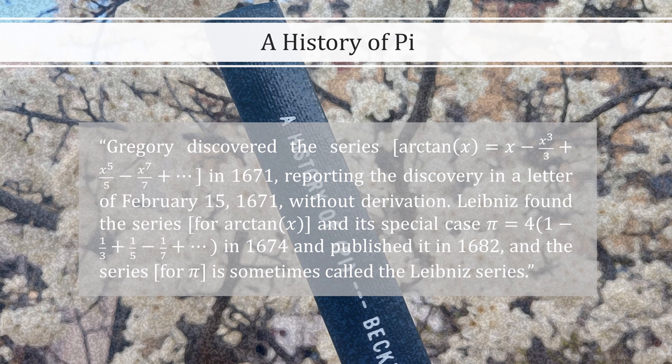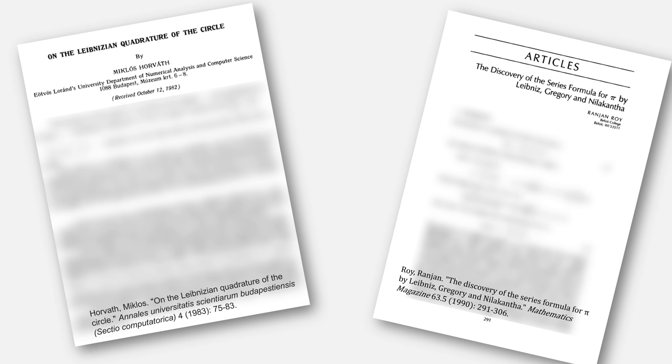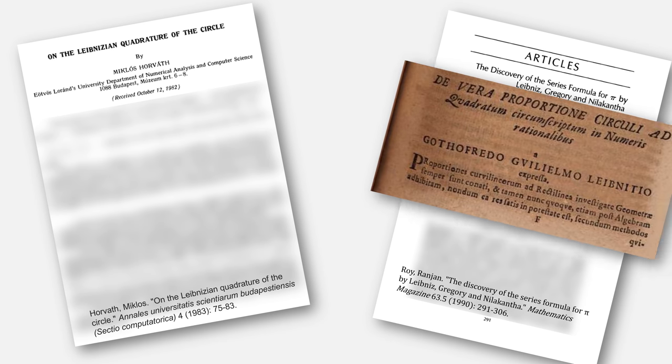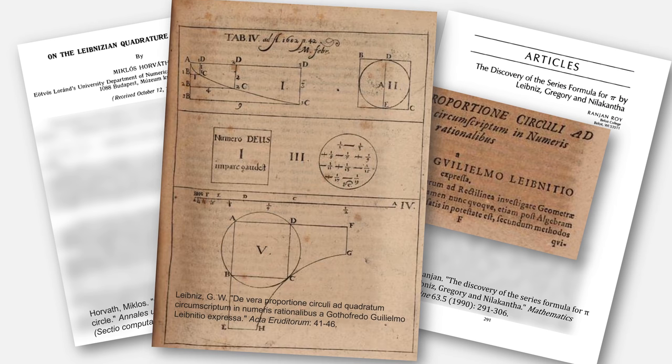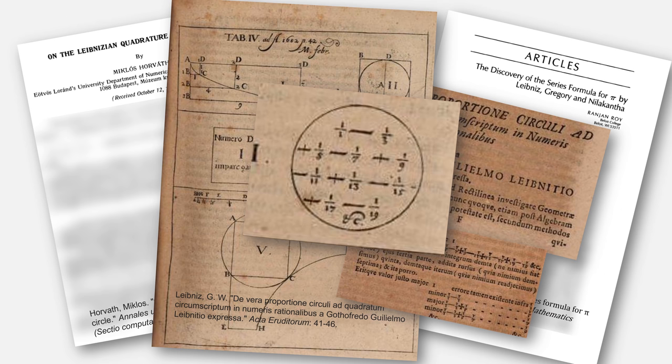Without derivation, Leibniz found the series for arctangent and a special case for Pi in 1674, and published it in 1682. And the series for Pi is sometimes called the Leibniz series. I then went looking for that 1682 paper, and came across these two references by Horvath and Roy. Horvath cites the original paper, which I then tracked down. It's written in Latin by Leibniz. Looking through it, you can see that series for Pi.